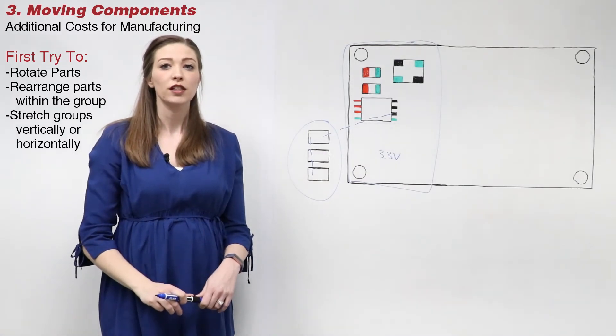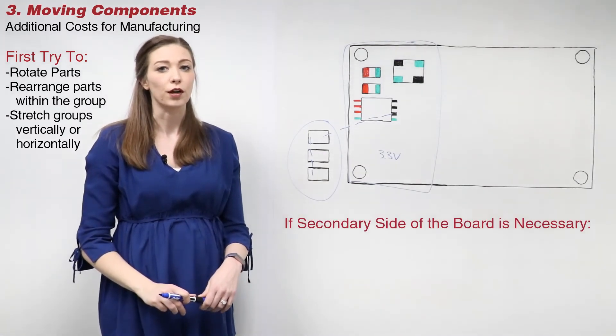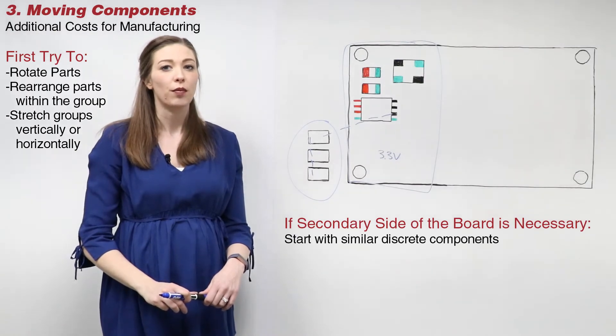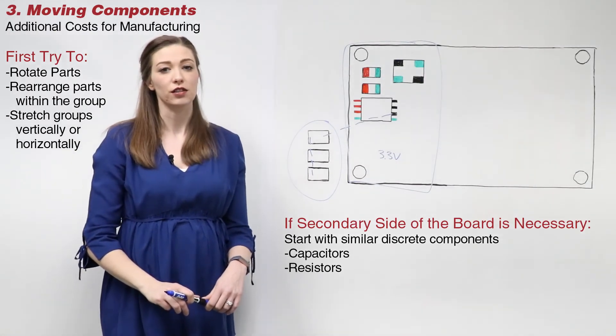If some parts do need to be moved onto the secondary side of the board, start with similar discrete parts like capacitors and resistors.